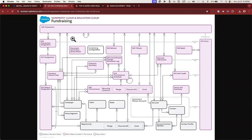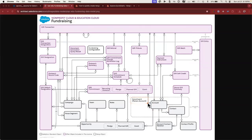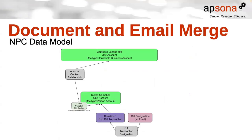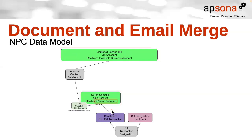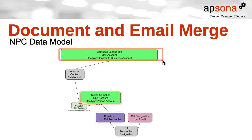Now let's move on to our data source. Here we have an entity relationship diagram (ERD) of the fundraising portion of Nonprofit Cloud. Gift Transaction is our core object representing donations. They are typically related to accounts, specifically person accounts that represent donors. The Account Contact Relationship object is a junction object that relates contacts to their households. Households are represented by accounts; contacts are represented by the person account record type; donations are represented by gift transactions, which are related to person accounts through the donor lookup.